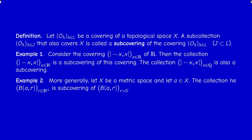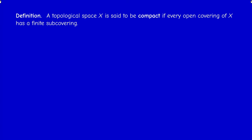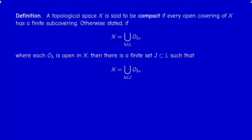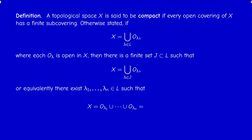We are now in a position to formulate the concept of compactness. The definition is concise: a topological space X is said to be compact if every open covering of X has a finite sub-covering. In symbols: whenever X can be written as a union of open sets O_lambda (lambda in L), then there exists a finite sub-collection such that X equals O_{lambda_1} union O_{lambda_2} union ... union O_{lambda_n} for some integer n.